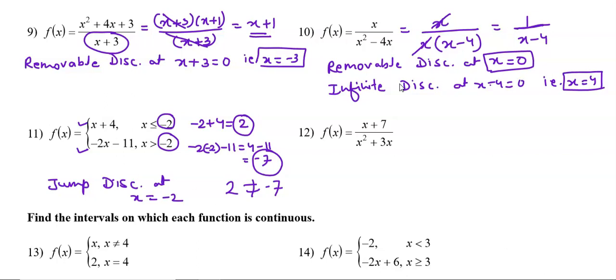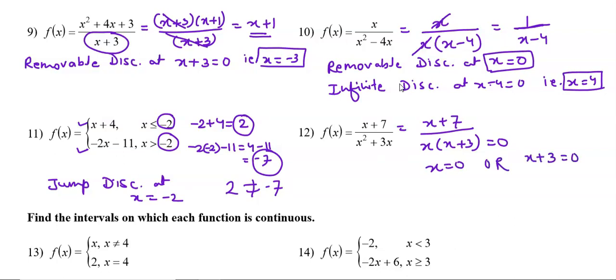Question number 12 is again a rational function. We simplify: (x+7) over denominator x(x+3). There is no common factor, so there is no removable discontinuity. Setting the denominator to 0 gives x = 0 or x + 3 = 0, i.e., x = -3. So there are two values giving infinite discontinuity.